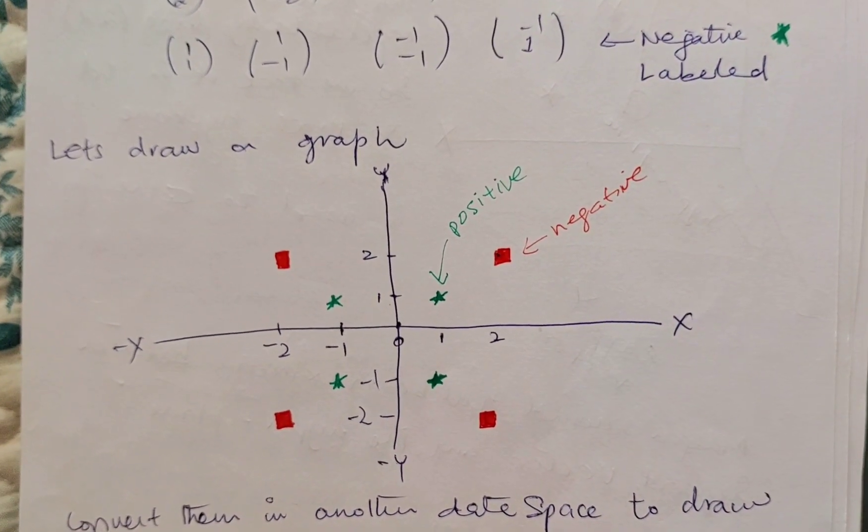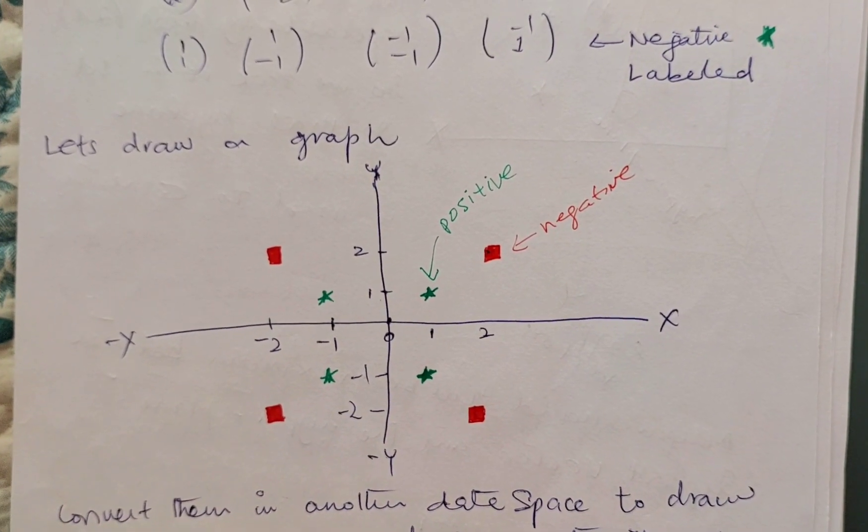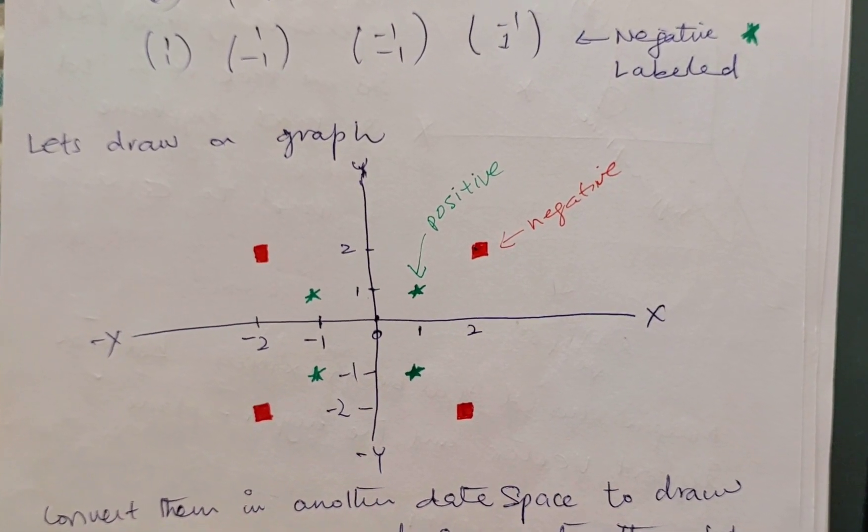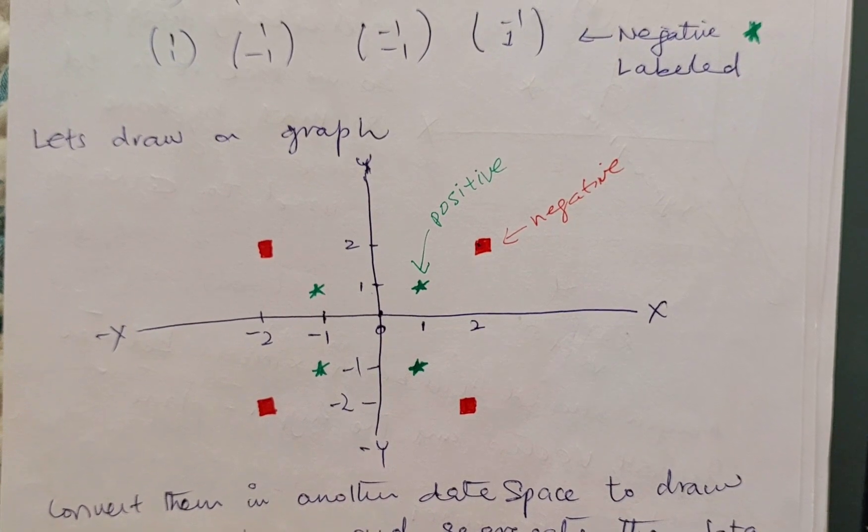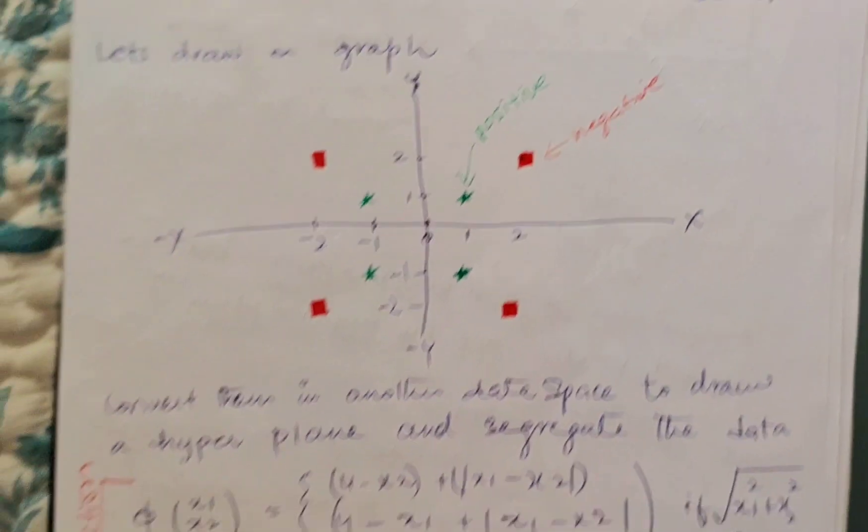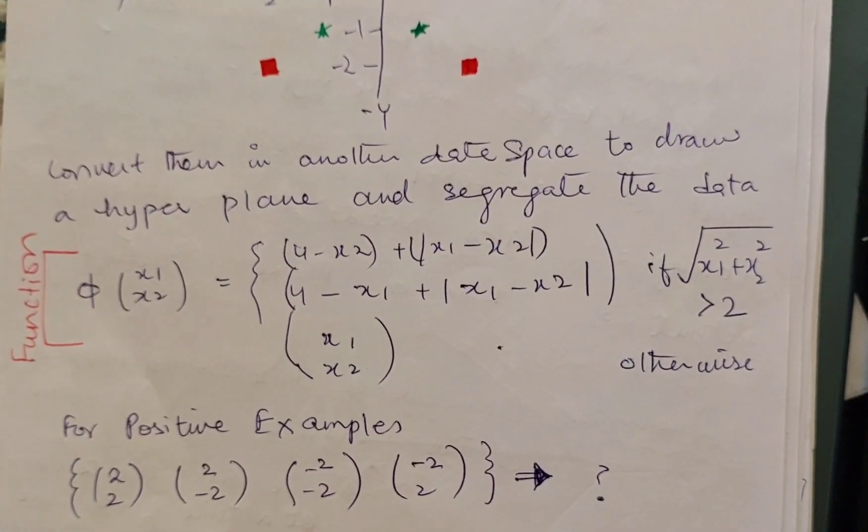So how am I going to segregate it? In order to segregate it, I am going to take help from support vector machine and I'm going to change the dimensions of this data.